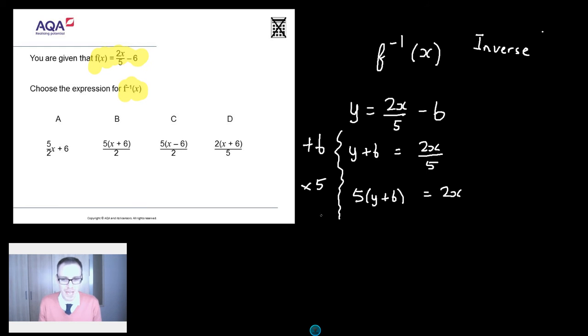And finally to leave me x on its own. I'm going to divide both sides by 2. So I'm going to end up with 5 brackets y plus 6 all divided by 2 is equal to x.